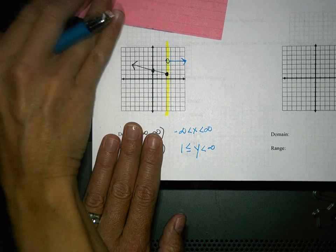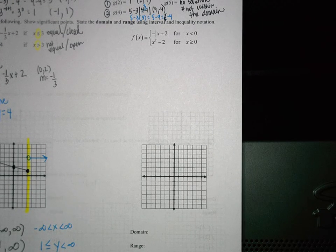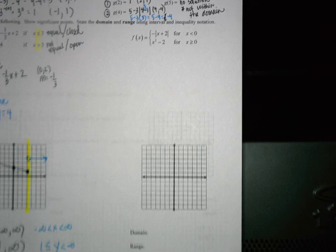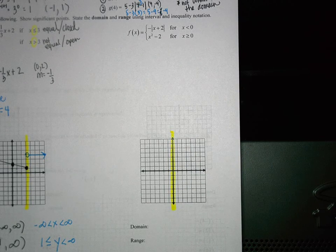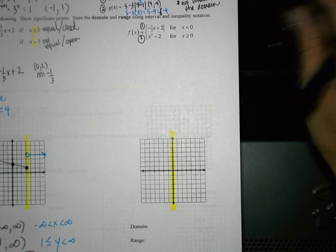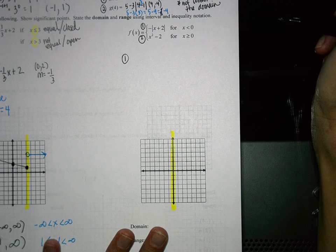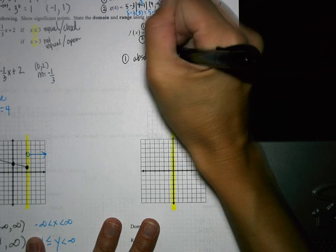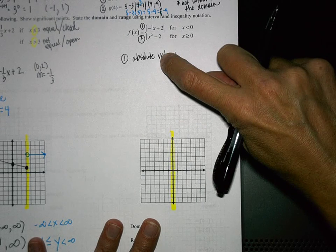We're going to do one more example for today. Where is my domain restriction — where should I highlight a line? At zero. So on my graph I'm going to highlight zero, knowing that my equations are going to be different to the right and left at zero. We have two equations: equation 1 and equation 2. Starting with equation 1 — what is that graph going to look like? It is an absolute value, which makes a V shape.